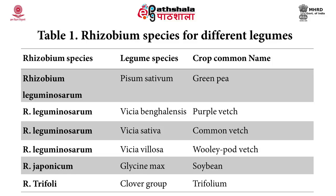Table 1 describes Rhizobium species for different legumes. Rhizobium species are particularly crop-specific. For example, Rhizobium leguminosarum is used only for woolly-pod vetch, and Rhizobium japonicum is used for Glycine max, commonly known as soybean. In total, nine species are mentioned in the table against their respective target crop plants.